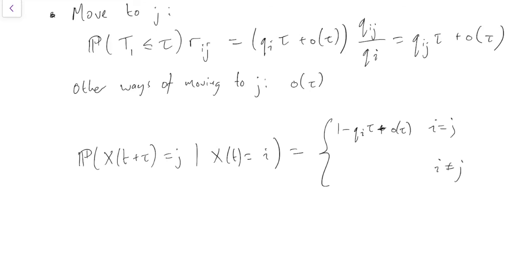And if i is not equal to j, then we have what we just had above: qij*tau + o(tau).